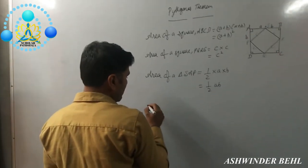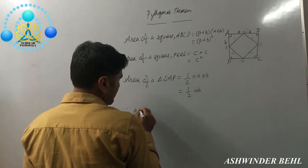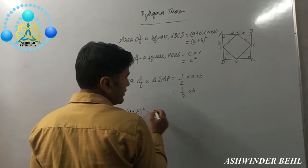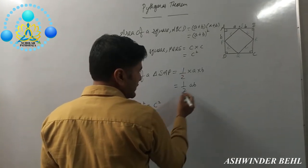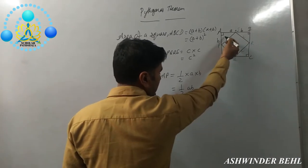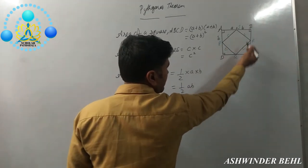According to our figure, what do you get here? A plus B the whole square is equal to C square plus how many triangles? 1, 2, 3, and 4.